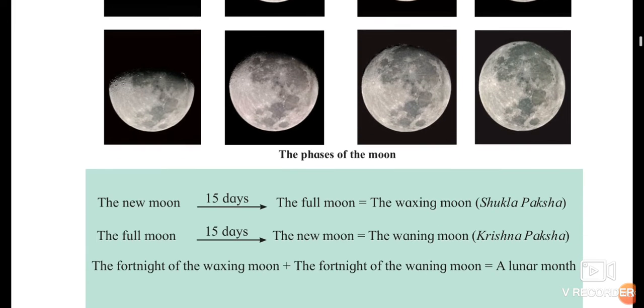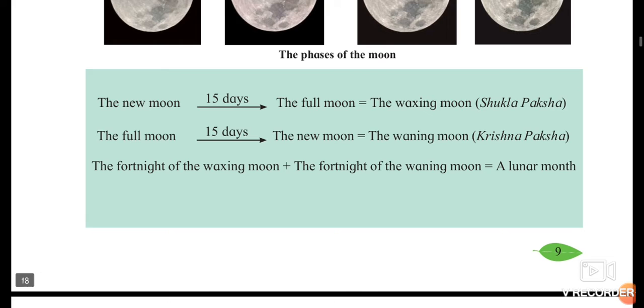Here they have given you a small table. From new moon to the next full moon, amvasya till purnima, there are 15 days and that is called waxing moon, which in Marathi we call shukla paksha. From full moon to new moon, purnima to amvasya, there are again 15 days, that is called waning moon. When you combine these two 15-day periods, you get a whole lunar month.